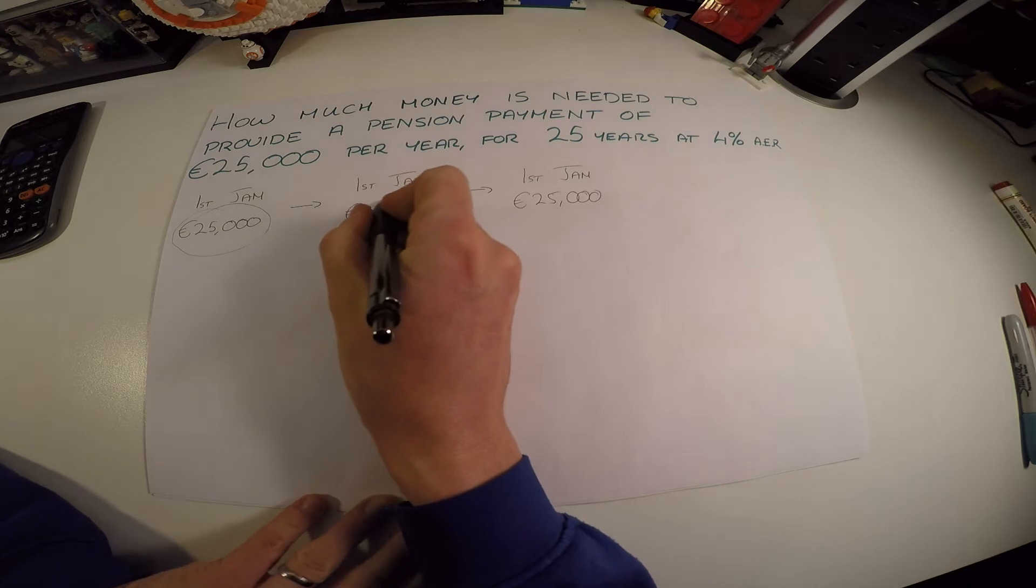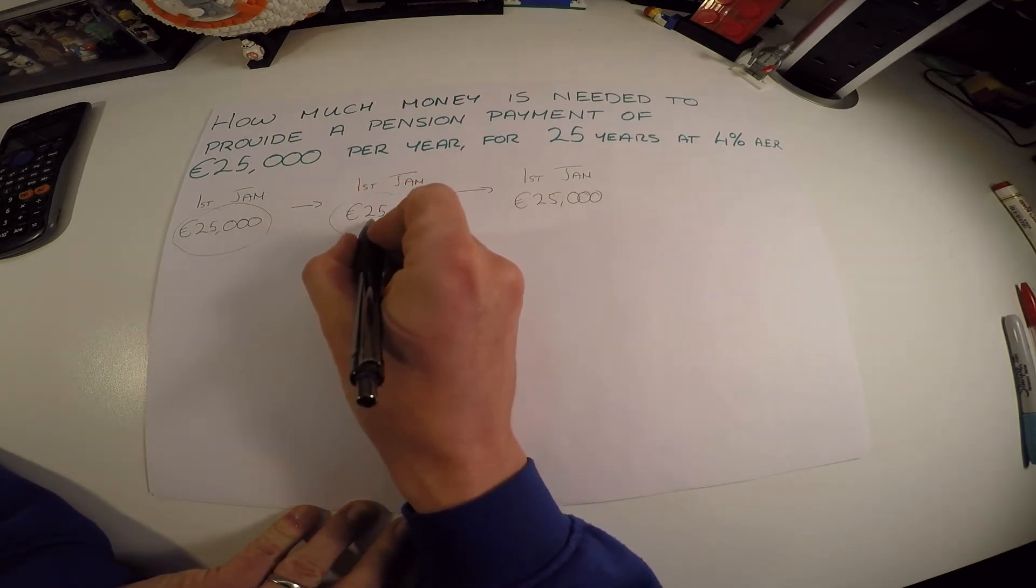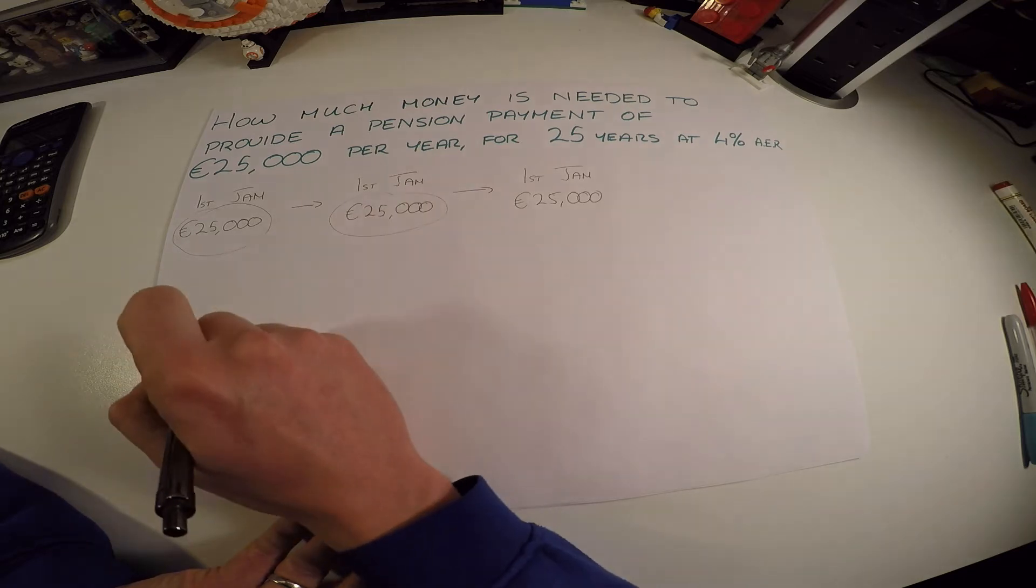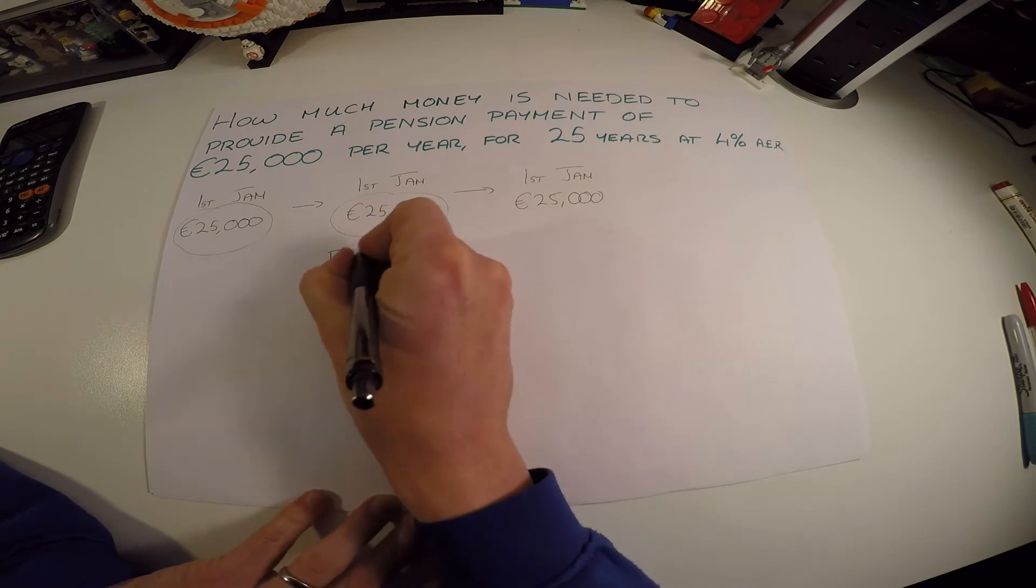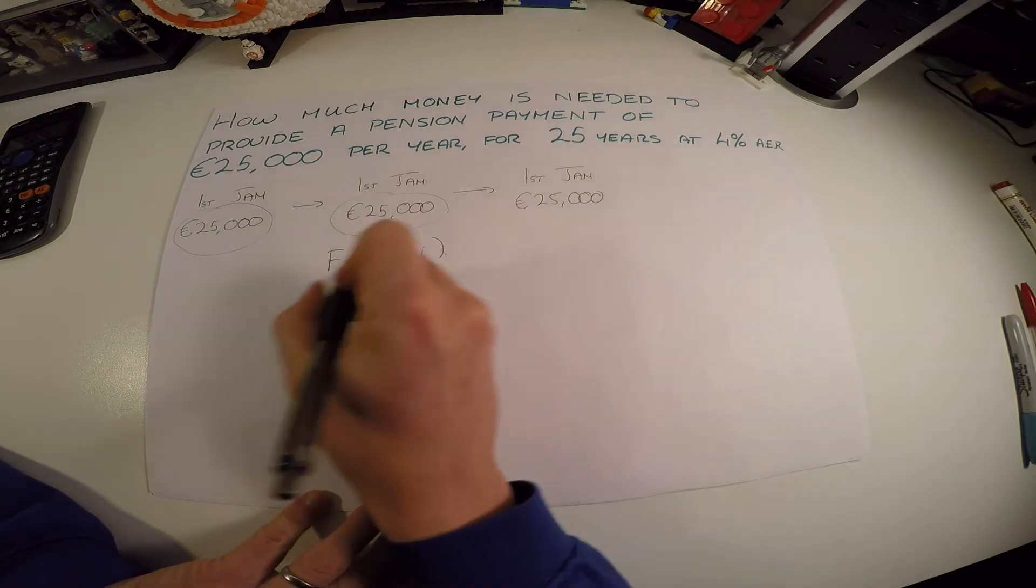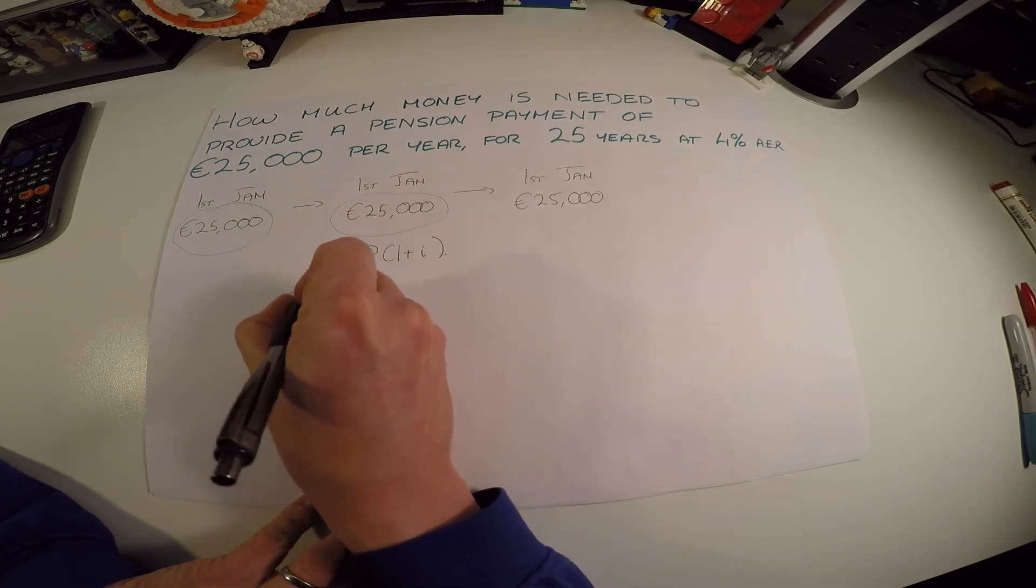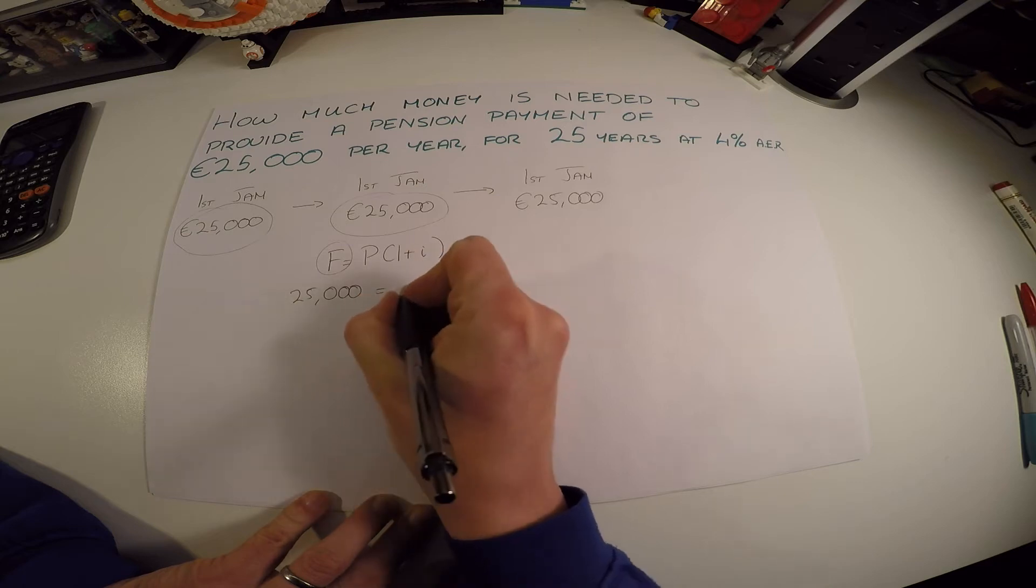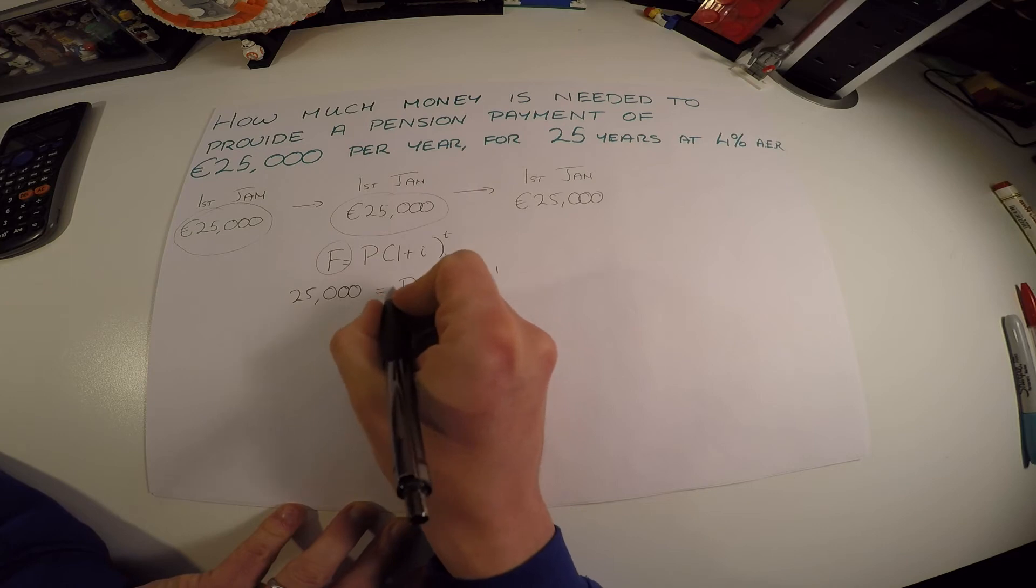So let's take this one here. How much do I need in my bank now to make sure there's 25,000 there in one year's time at 4%? Looking at the compound interest formula, I need the final value of this in one year's time to be 25,000. I want to figure out what I'm putting in there now, but I know it's going to earn interest at 1.04 for one year. So actually the amount of money I need in there now, solving for P on its own, goes to 25,000 over 1.04 to the 1.